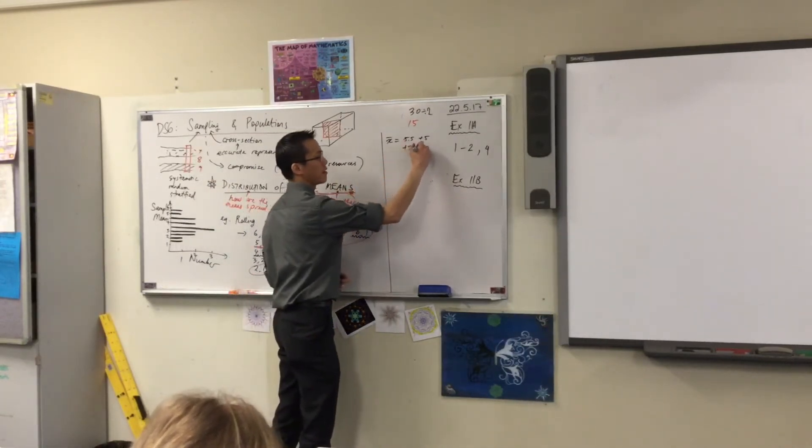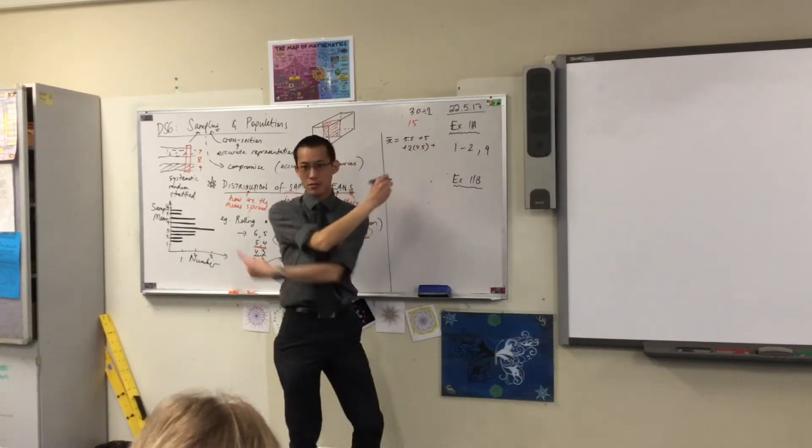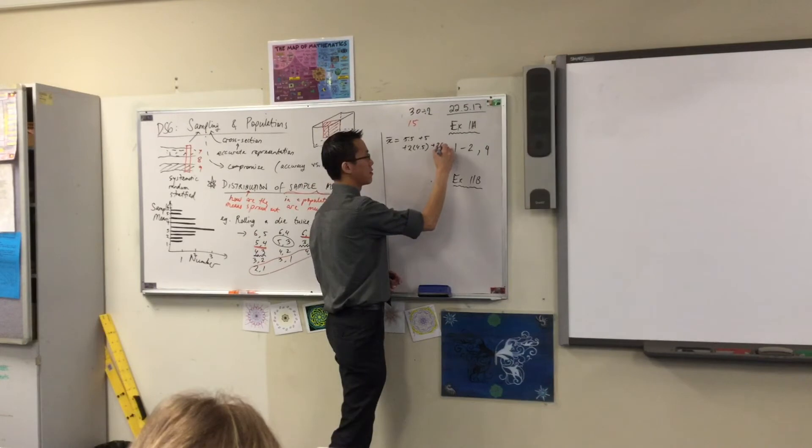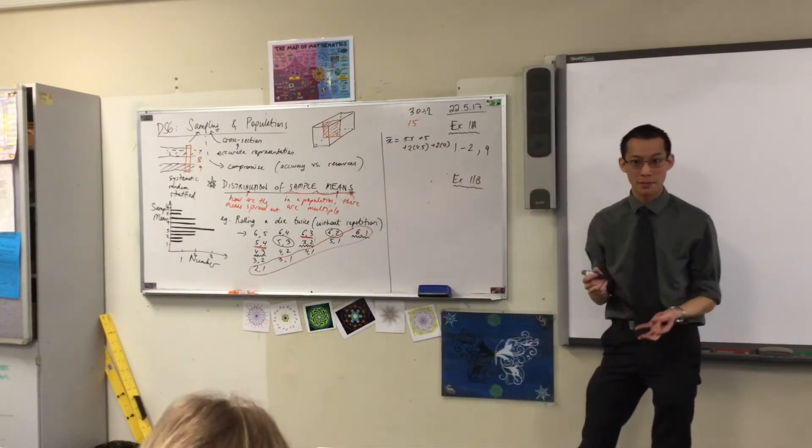So therefore I'm going to say I'll do 4.5 twice. And I'll do 4 how many times? Look, also twice. If I've calculated correctly, there is one and only one mean that happens three times, which is?